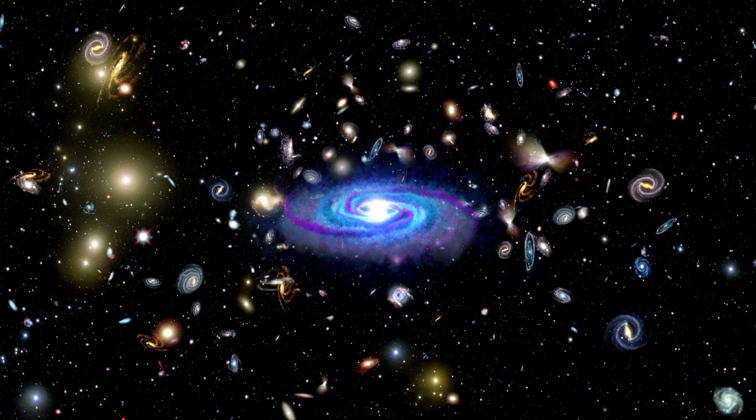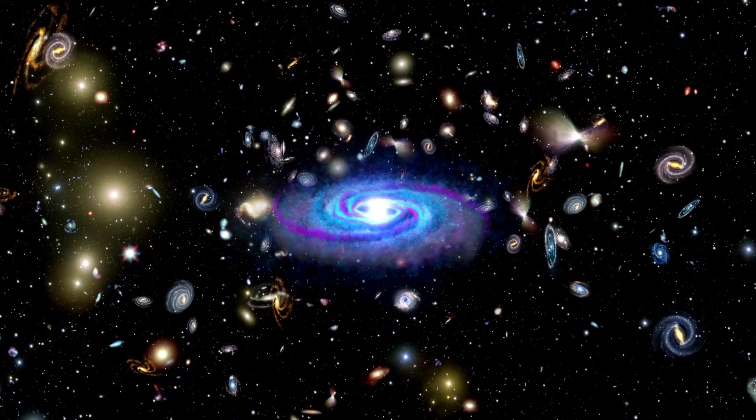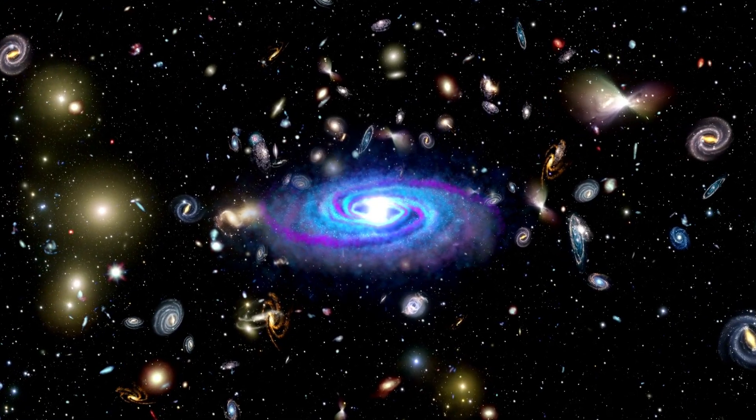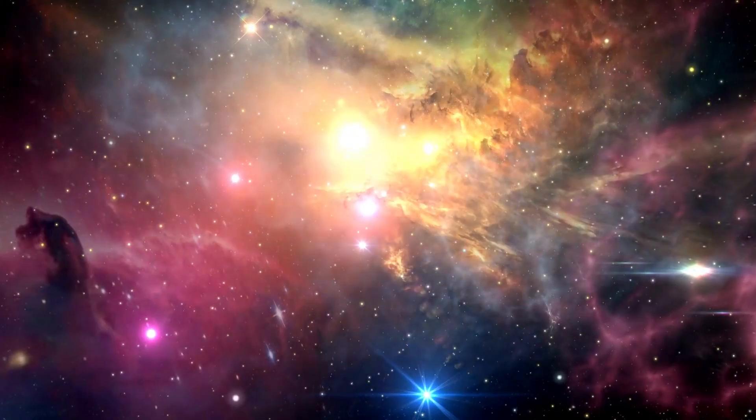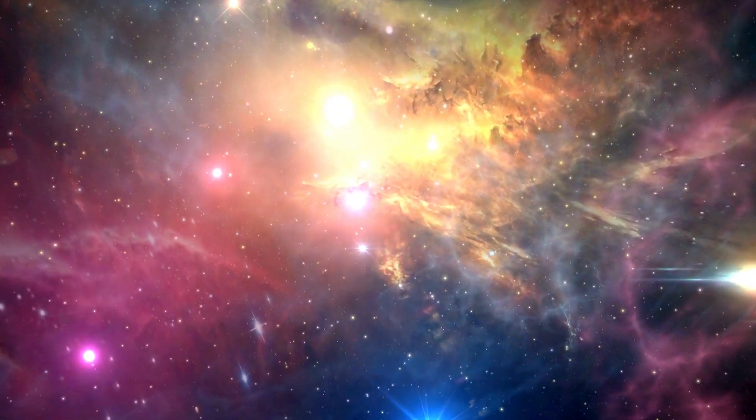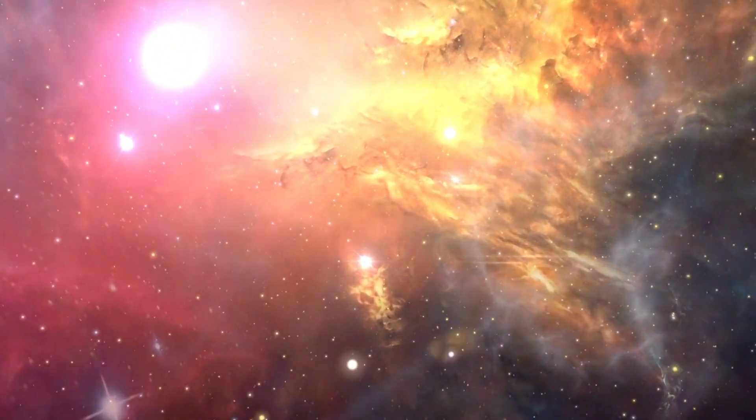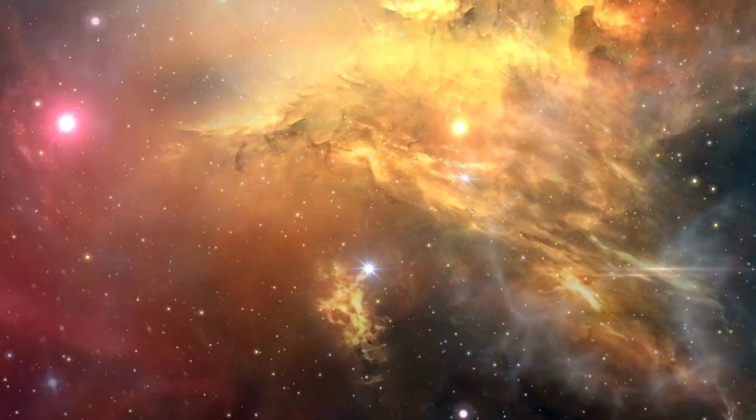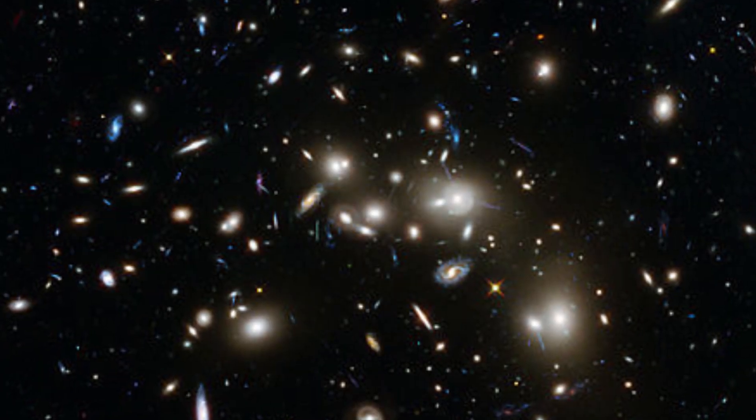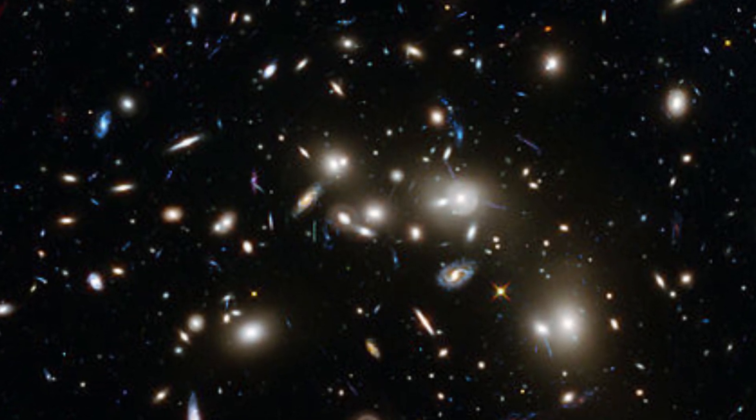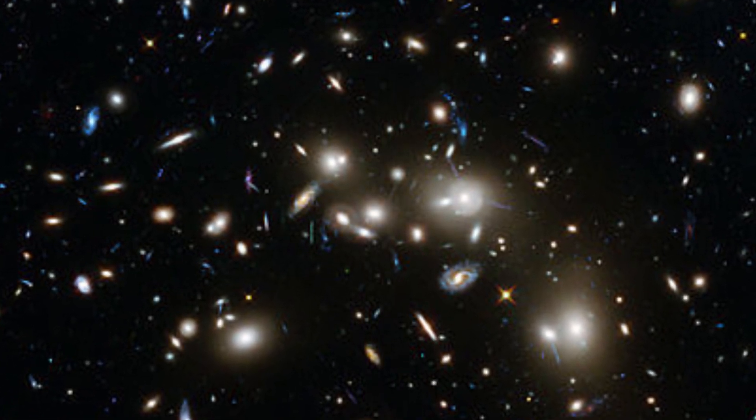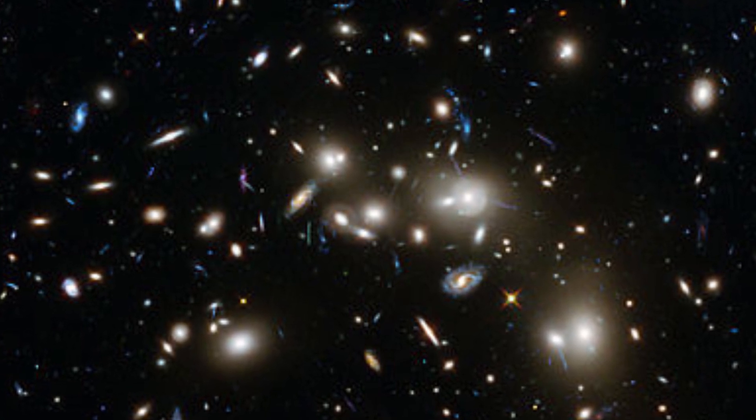The striking images captured by the James Webb Telescope have challenged our understanding of the origins of the universe. Specifically, these images directly contradict the Big Bang Hypothesis, which has long been considered an unquestioned truth by most cosmology theorists. The galaxies captured in these images appear to be small, smooth, old, and numerous compared to the predictions of the Big Bang Hypothesis.